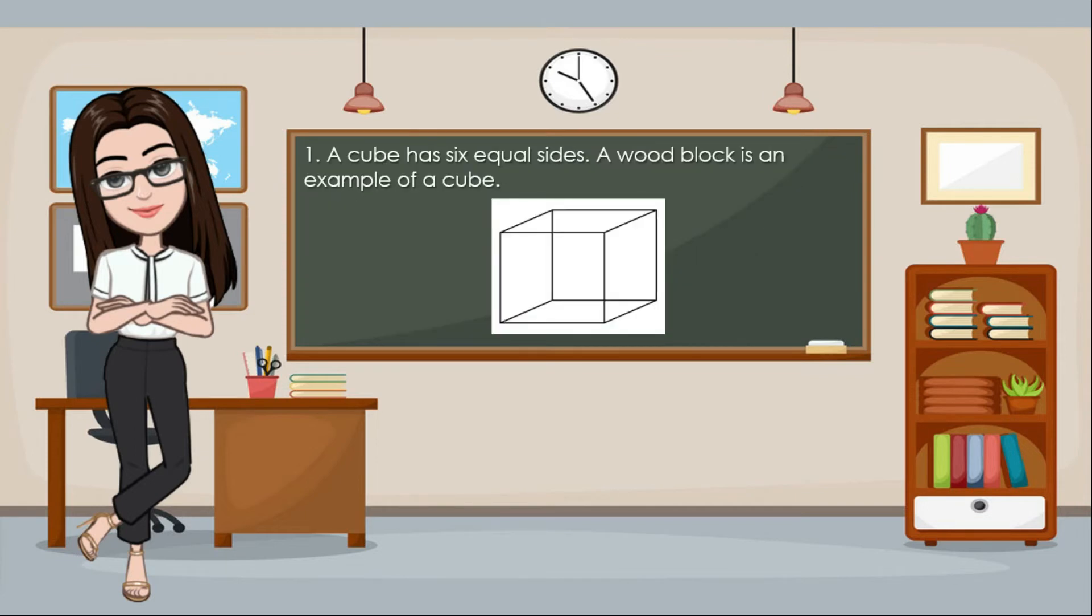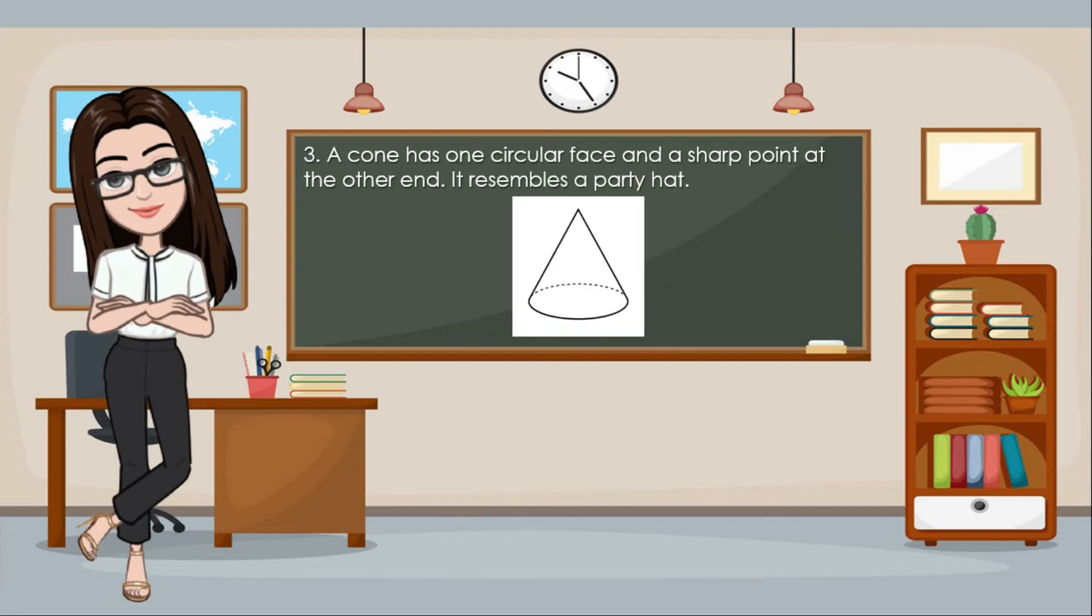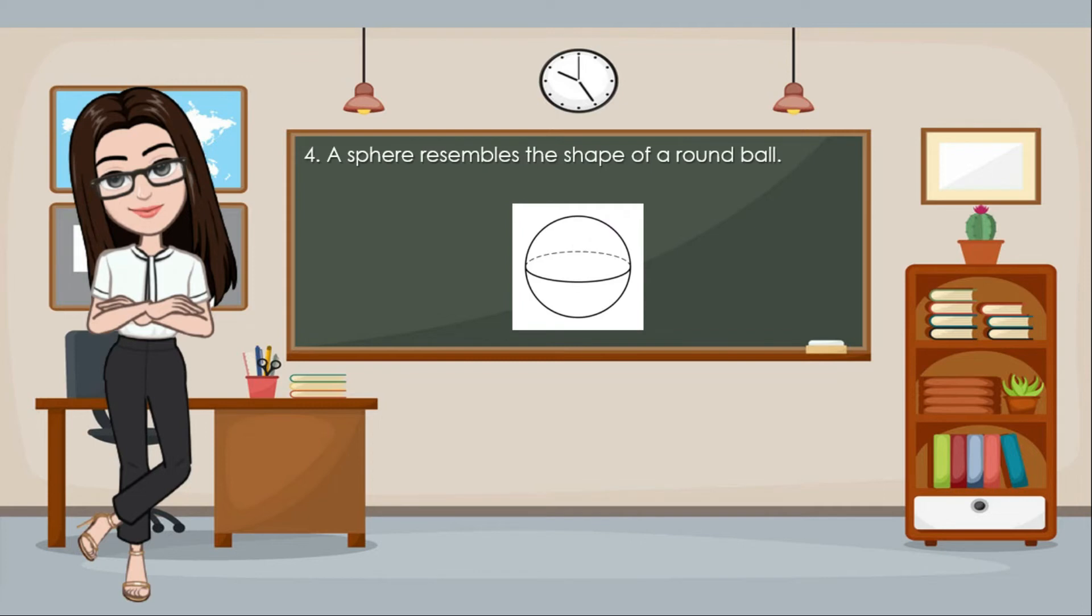A wood block is an example of a cube. A cylinder has one surface and two circular ends. It looks like a can. A cone has one circular face and a sharp point at the other end. It resembles a party hat. A sphere resembles the shape of a round ball.